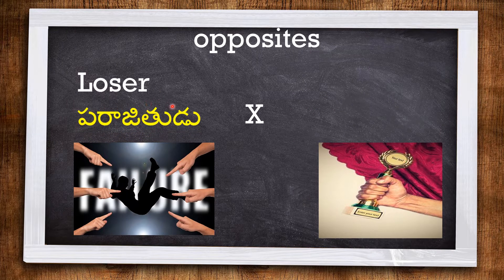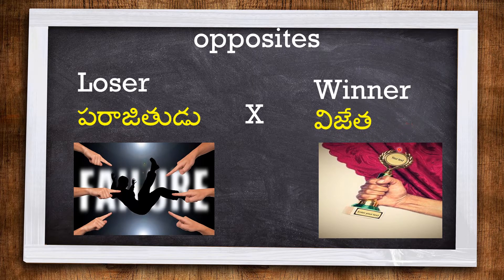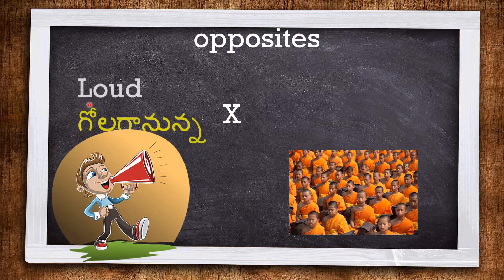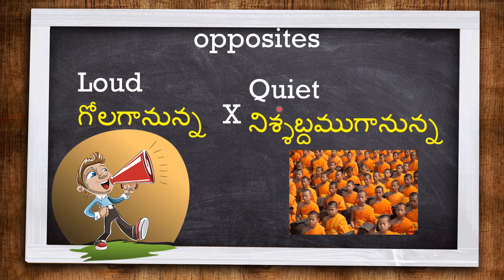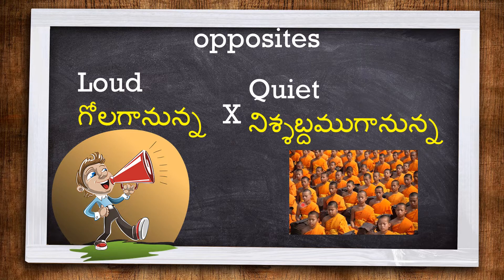The next pair is LOUD and QUIET. This is quiet — all these are very quiet.